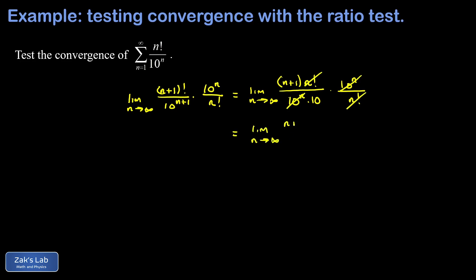The 10 to the n's cancel out, the n factorials cancel out, and I end up with the limit as n goes to infinity of (n+1) over 10, which goes to infinity. And we failed the ratio test.